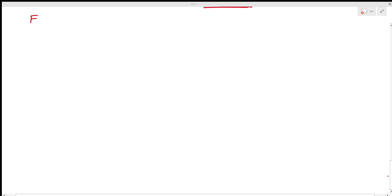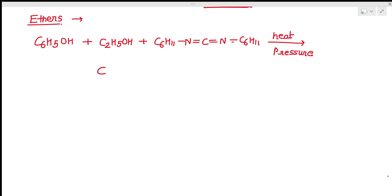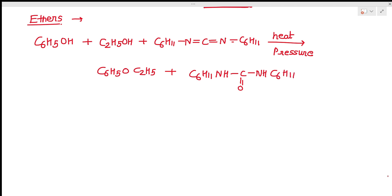Similarly, if we need to prepare ethers, we can use DCC. We take a mixture of phenol plus alcohol plus DCC and apply prolonged heating under pressure. For example: C6H5OH plus C2H5OH plus DCC, heated under pressure for a long time, gives C6H5-O-C2H5 (phenyl ethyl ether) plus C6H11-NH-C(=O)-NH-C6H11.